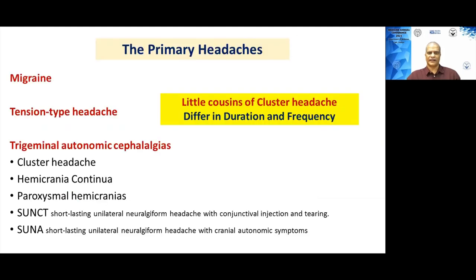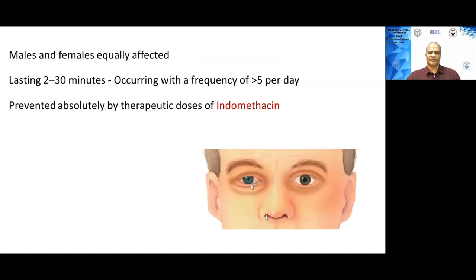Other TAC subtypes differ in duration and frequency. Two important ones are hemicrania continua and paroxysmal hemicrania, both of which are highly responsive to indomethacin and are called indomethacin-responsive headaches.